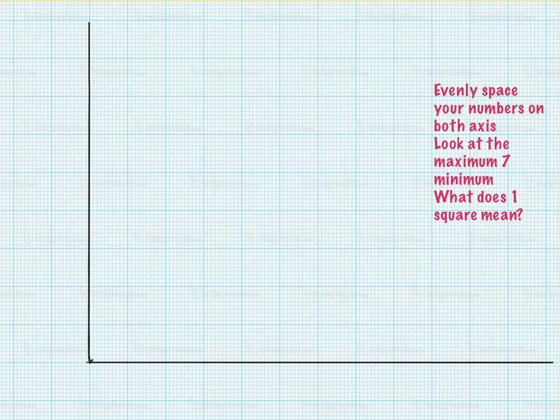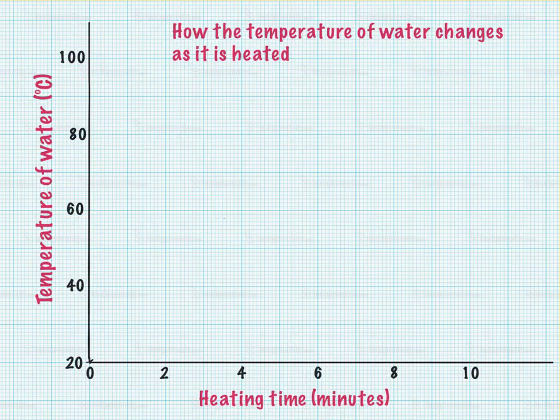I've put a thing here and I put some numbers on. Notice I haven't started from zero, but notice also that one, two gaps is 20, one, two gaps is still 20, one, two gaps is still 20. So I've done that. I've told the person who's looking at this chart that I'm measuring the temperature of water up here and it's in degrees C, and down the bottom I'm measuring how long I'm heating it.